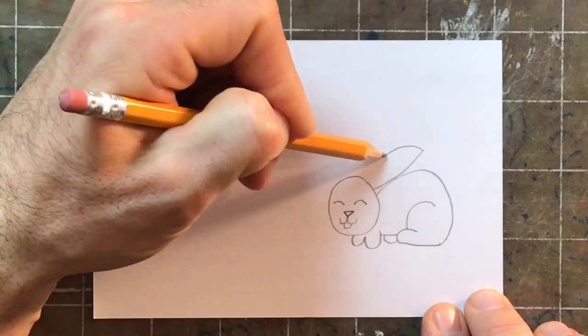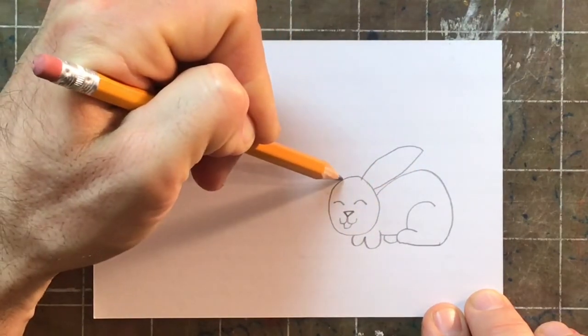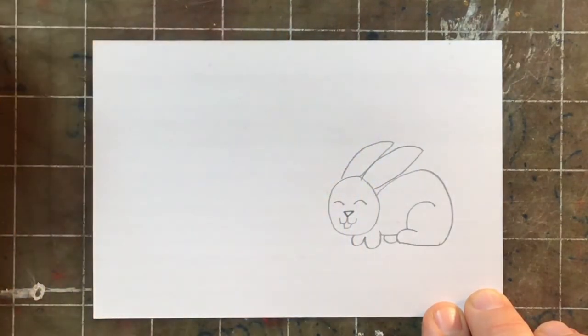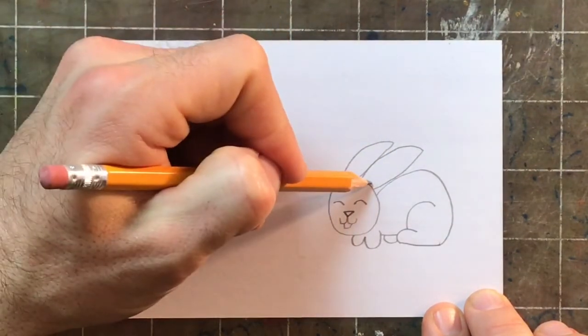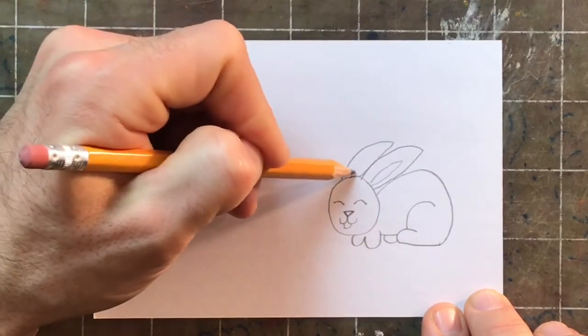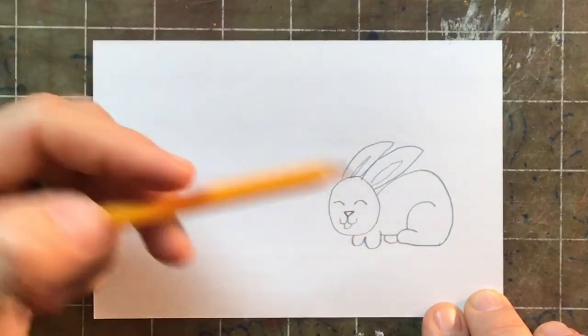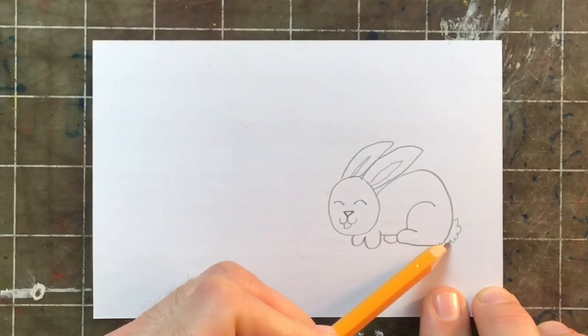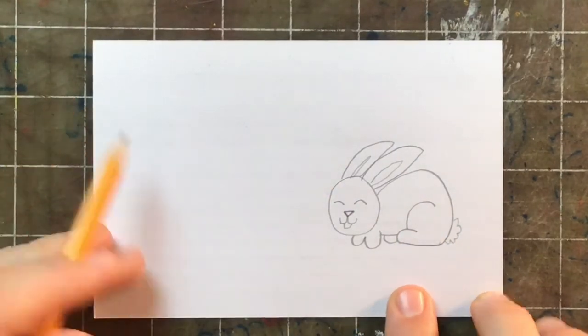Next, I'm going to add his big ears. And when rabbits are hiding, they lay their ears down, like this. Instead of having them stick straight up. So this rabbit is playing hide and seek. I use that same shape inside the ears. There we go. Last, he needs a little furry tail. So I use a curly line for the tail.